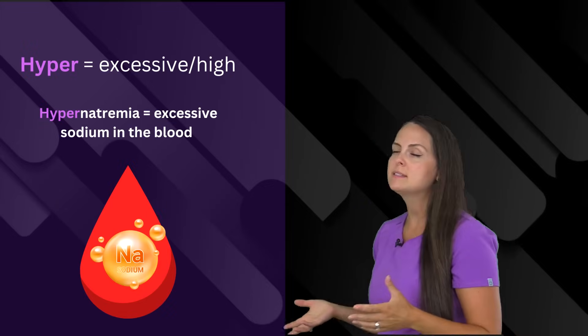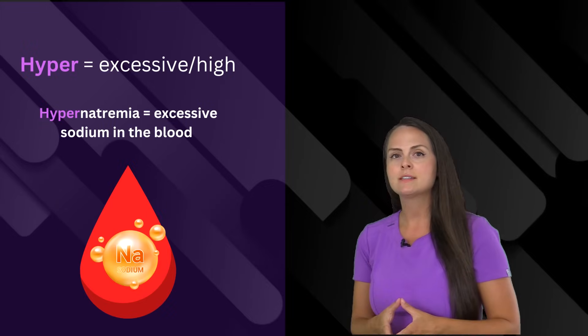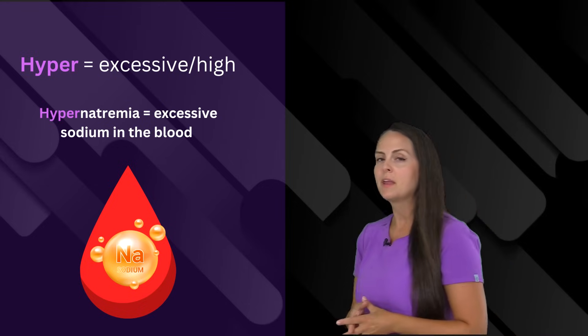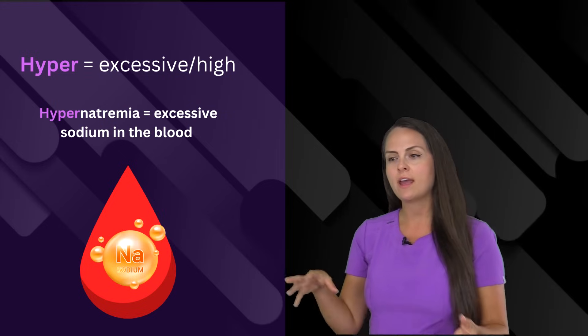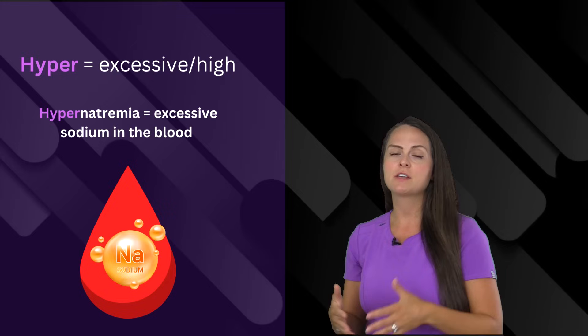Next up is hyper, which means excessive or high. There are a lot of electrolyte imbalances that love to use this prefix. For instance, like hypernatremia. Whenever you take this word apart, look at its prefix, its root and its suffix, you get high or excessive amounts of sodium in the blood.